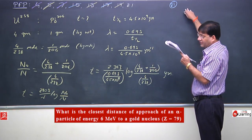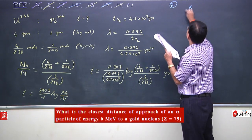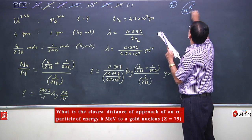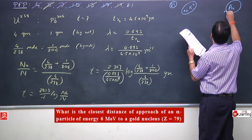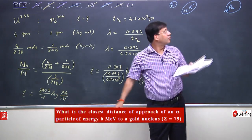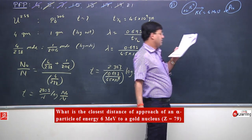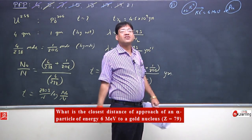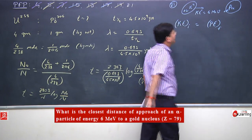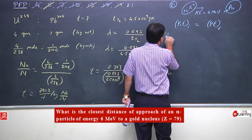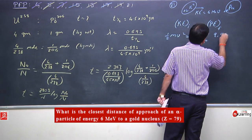Now the 21st problem: What is the closest distance of approach of an alpha particle of 6 MeV to a gold nucleus? The alpha particle has charge +2, and the gold nucleus has charge +79. For the closest distance of approach, initial kinetic energy = final potential energy: ½mv² = (1/4πε₀)(q₁q₂/r). Here initial KE is 6 MeV = 6 into 10⁶ electron volts.